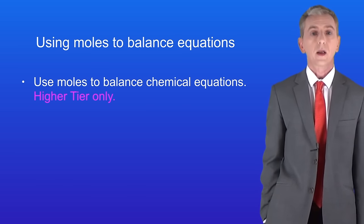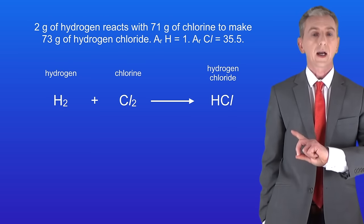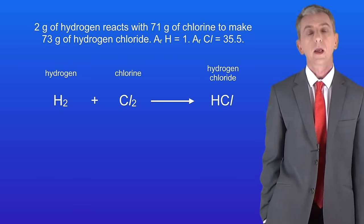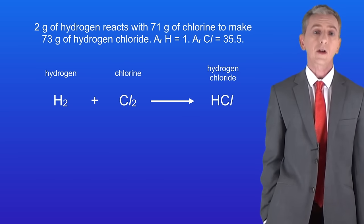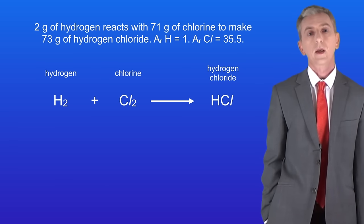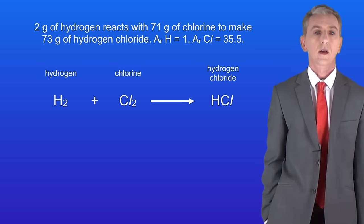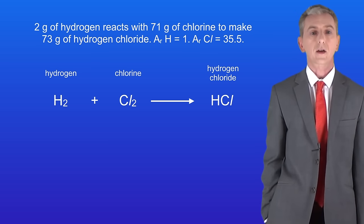I'm going to start with an easy example. This shows the reaction between hydrogen and chlorine to make hydrogen chloride. The question tells us that 2 grams of hydrogen react with 71 grams of chlorine to make 73 grams of hydrogen chloride. We're going to use that information to balance the equation. The first thing we need to do is calculate the number of moles of all of the chemicals in our reaction.